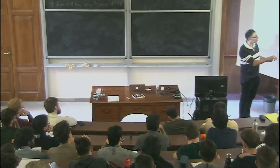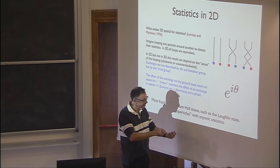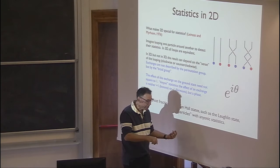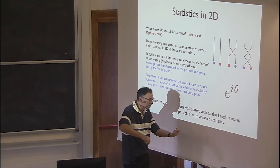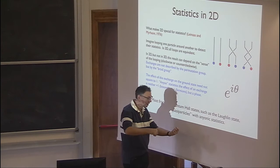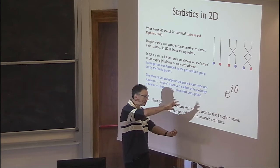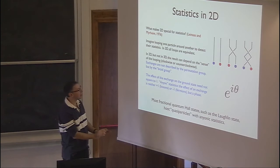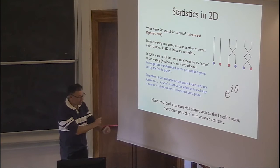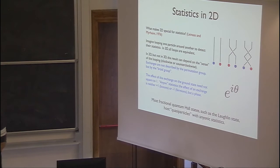The precise mathematical statement is that in three dimensions, we think statistics of point-like particles is given by representations of the permutation group, and the permutation group is pretty simple, basically bosons and fermions. In two dimensions, if you're going to try to do an exchange experiment, you'd have to move the particles around each other. In two dimensions there's actually a topological difference between moving the particles around each other clockwise and counterclockwise. Imagine fixing one particle and moving the other one around it in a loop. In two dimensions, this loop and that loop, there's no way to connect them.